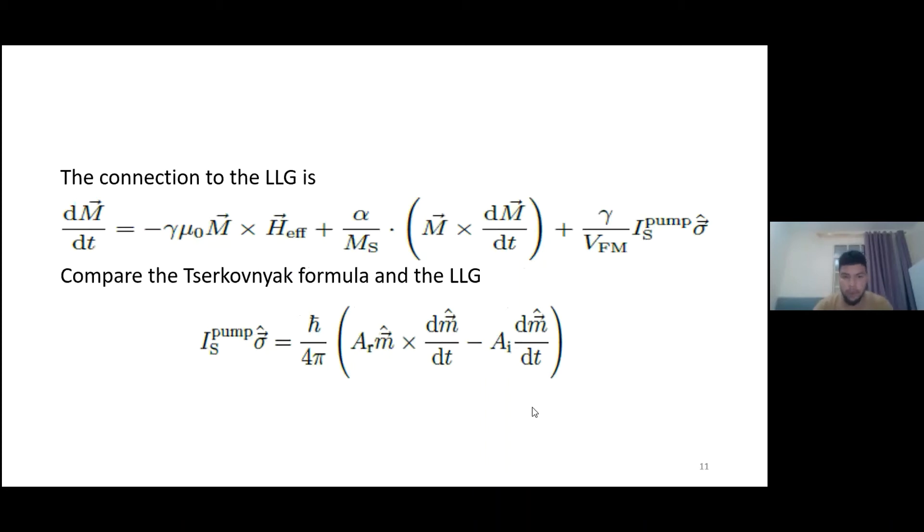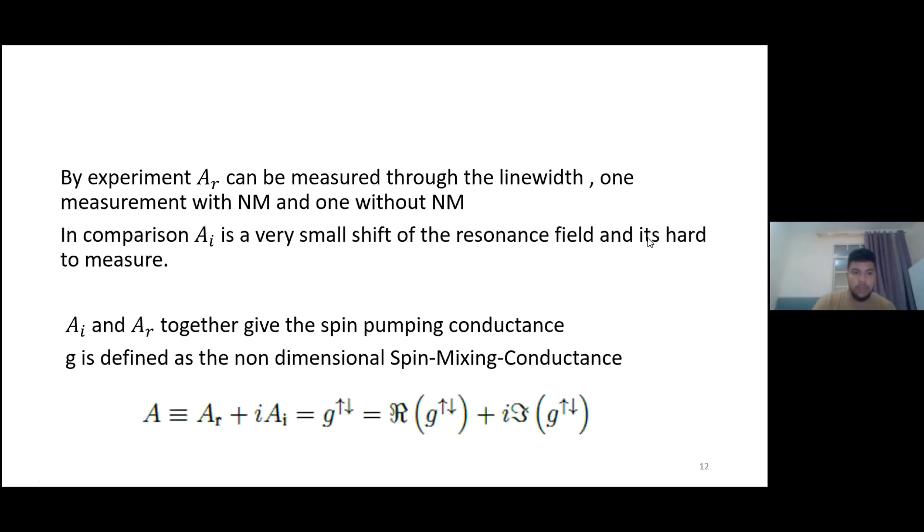Now we can compare the formula to the Landau-Lifschitz equation. And we see that AR is proportional to the damping term, to the first term in the Landau equation. And AI is parallel to the precession. And this part will interact with the gamma, which is the gyromagnetic ratio. As an experiment, AR can be measured through the line width of the resonance lines. If we measure the experiment one time with a normal metal layer and one time with just the ferromagnetic layer and the other time without the normal metal layer. And AI can also be measured, but the shift is very, very small. So it's very hard to measure.